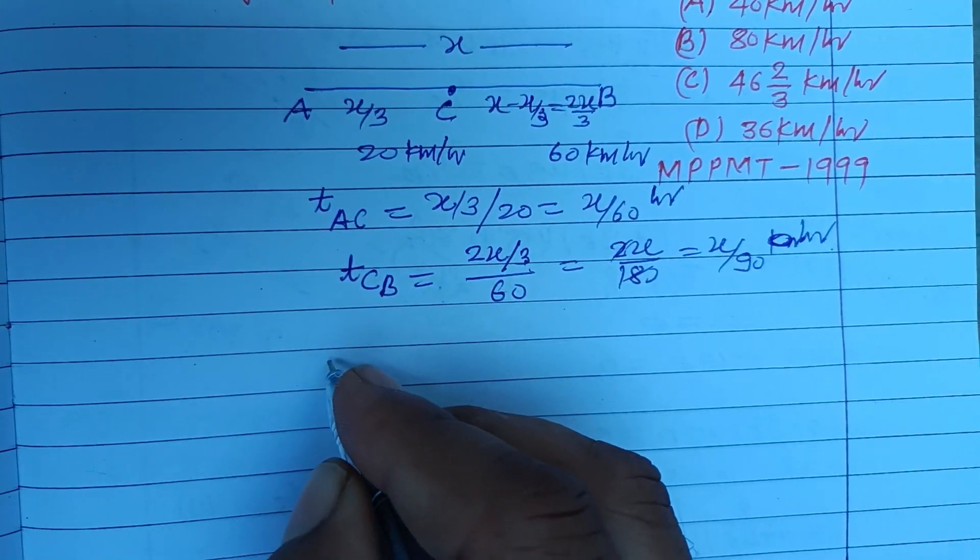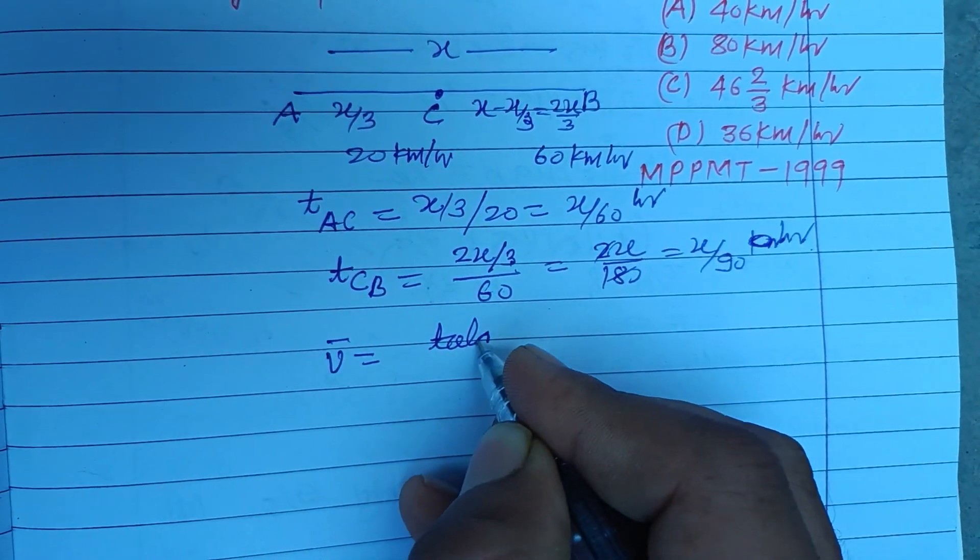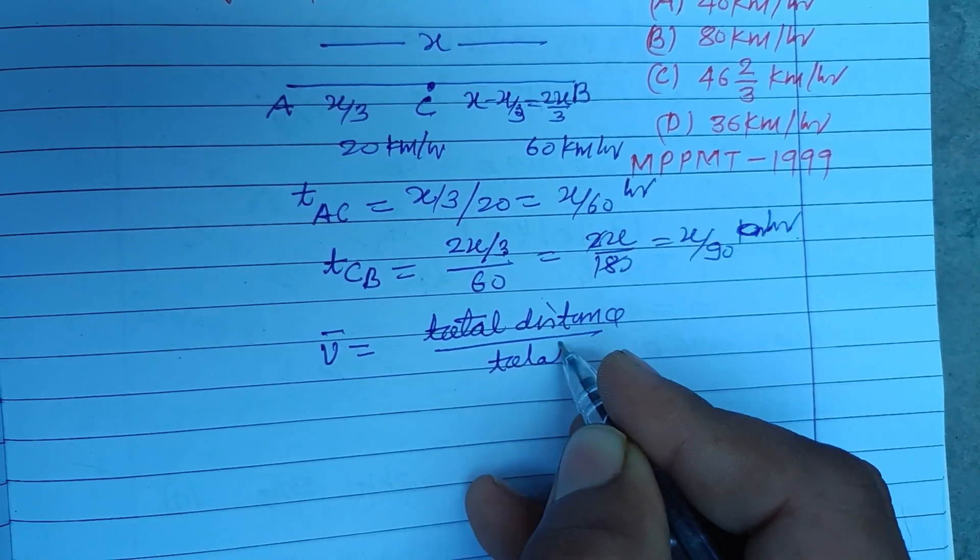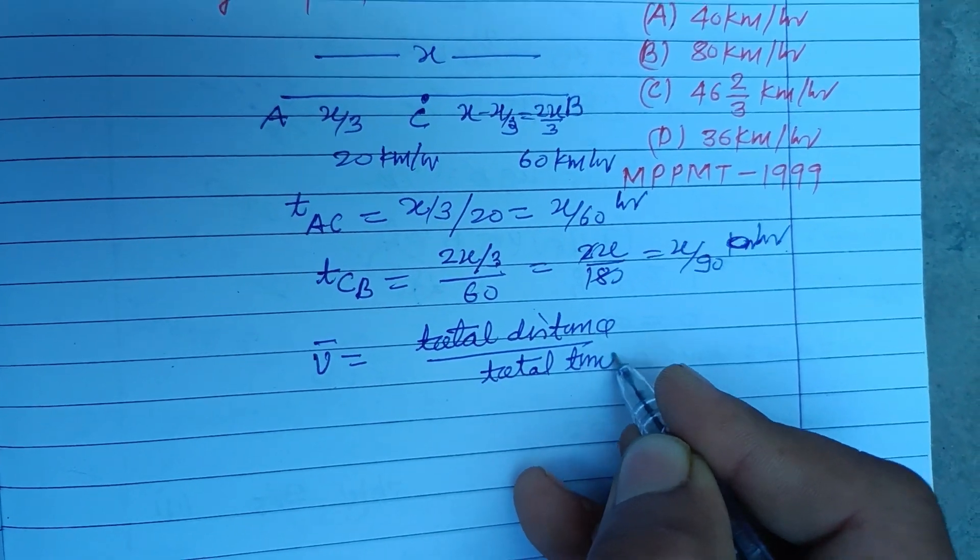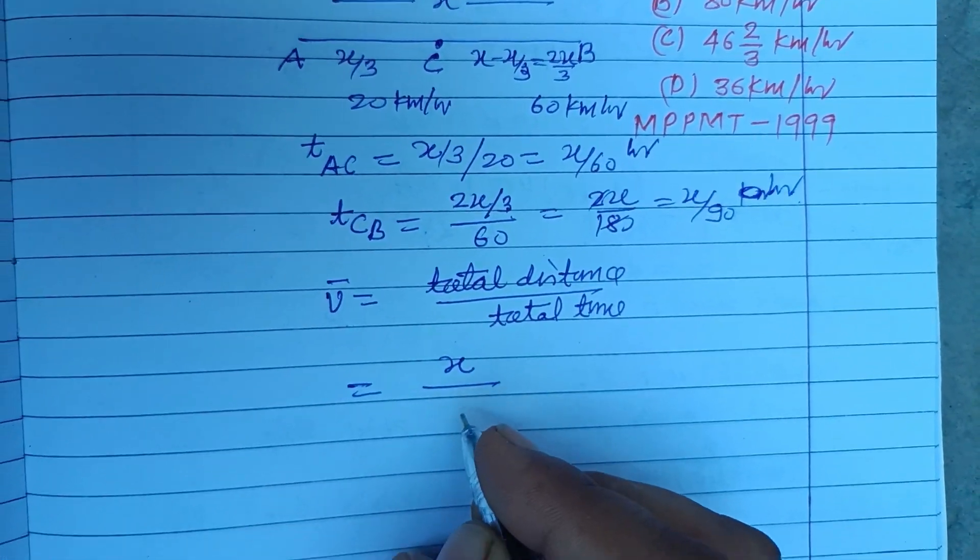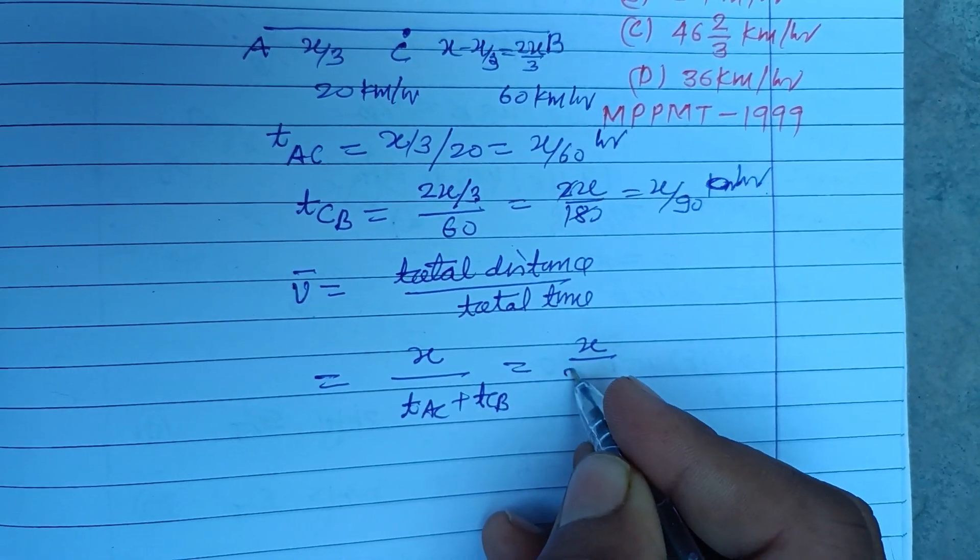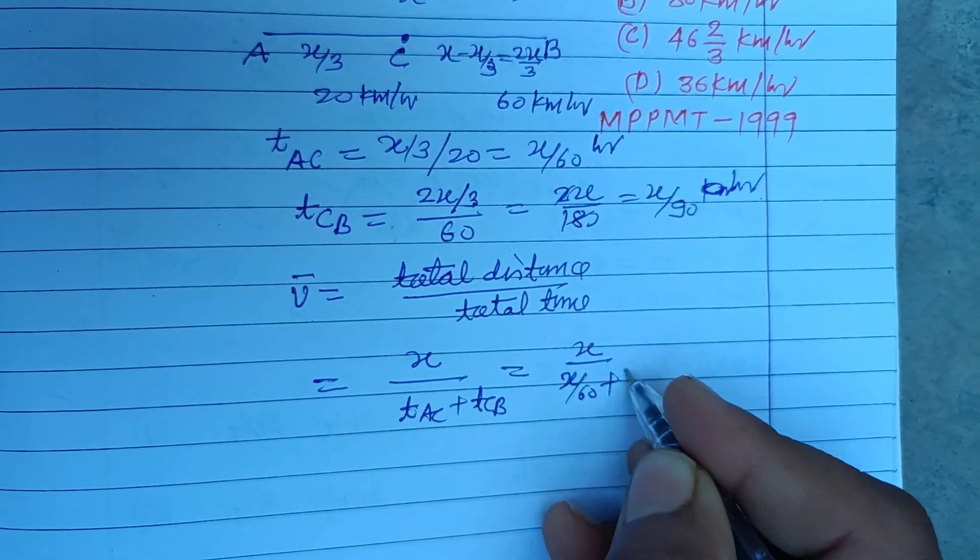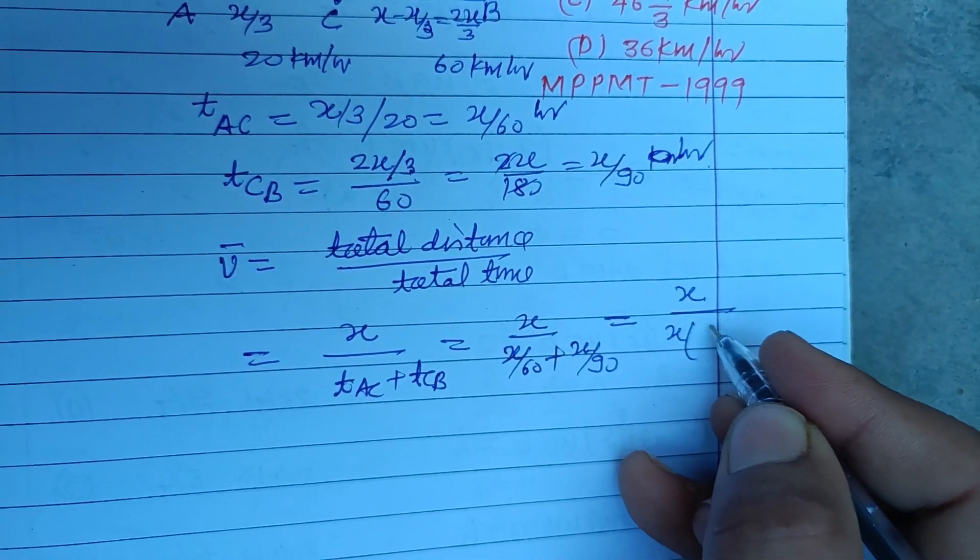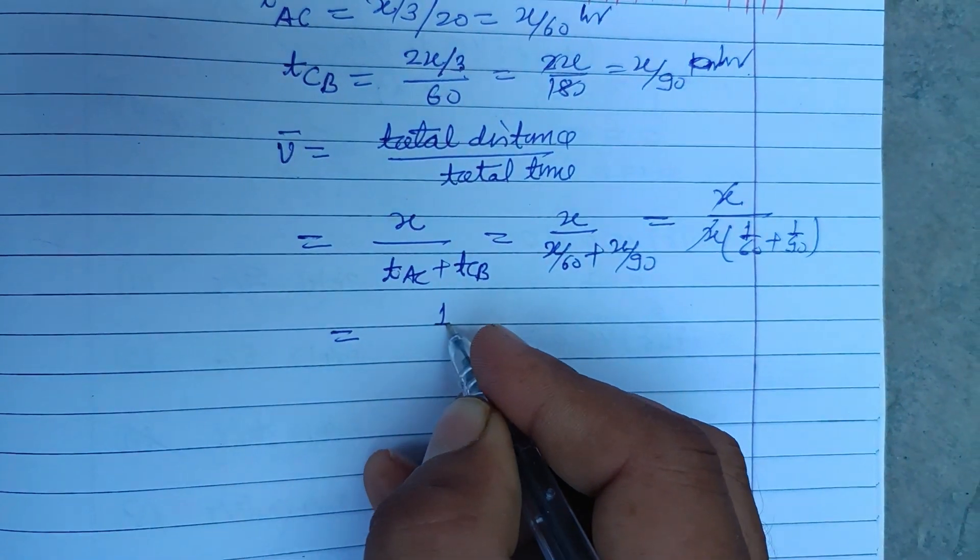Now average speed equals total distance over total time. This is the formula. Total distance is X and total time is TAC plus TCB. So X over X/60 plus X/90. Here X is common: 1/60 plus 1/90. So X cancels, we get 1 over 1/60 plus 1/90.